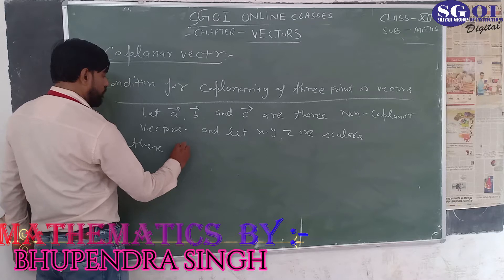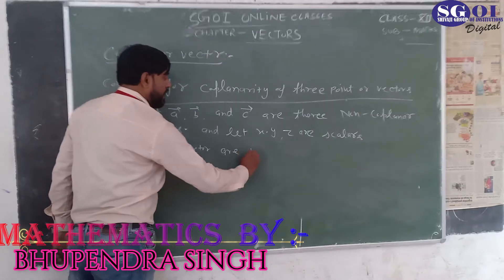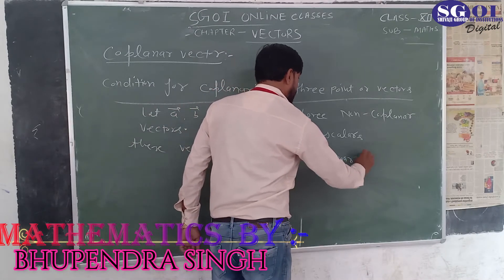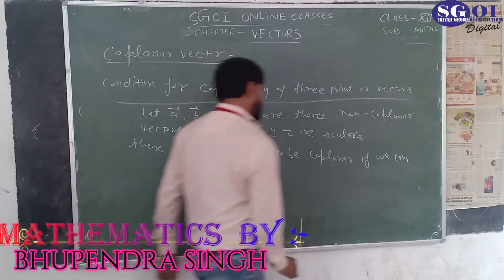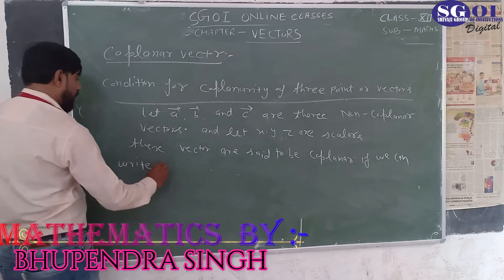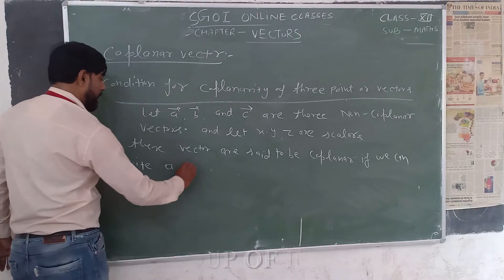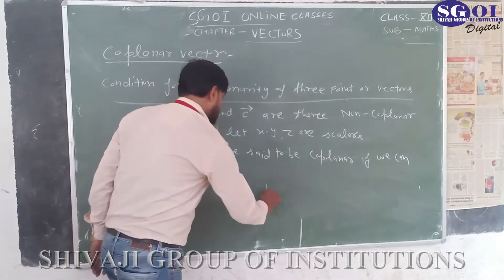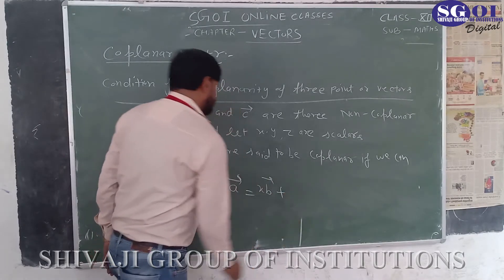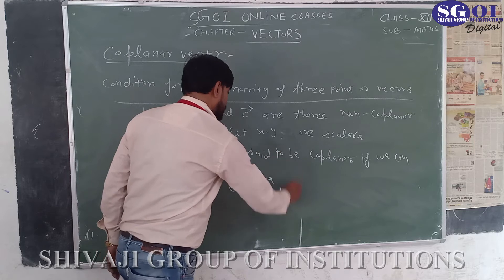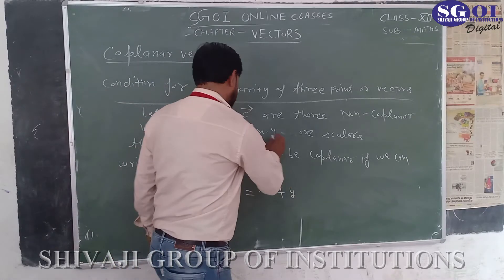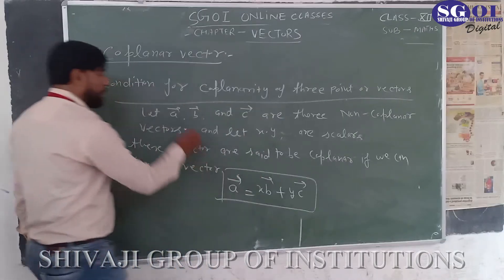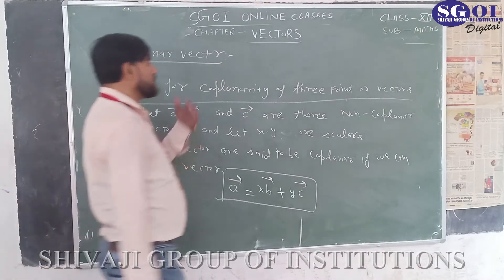These vectors are said to be co-planar if we can write one vector as a linear combination of the other two vectors. That is, A equals X times vector B plus Y times vector C. So if we can write a vector in this form, we can call the vectors co-planar.